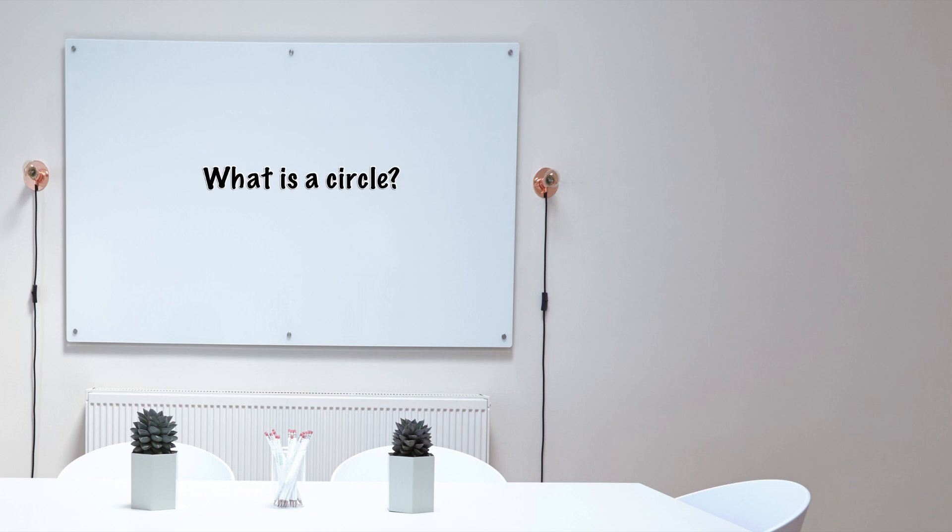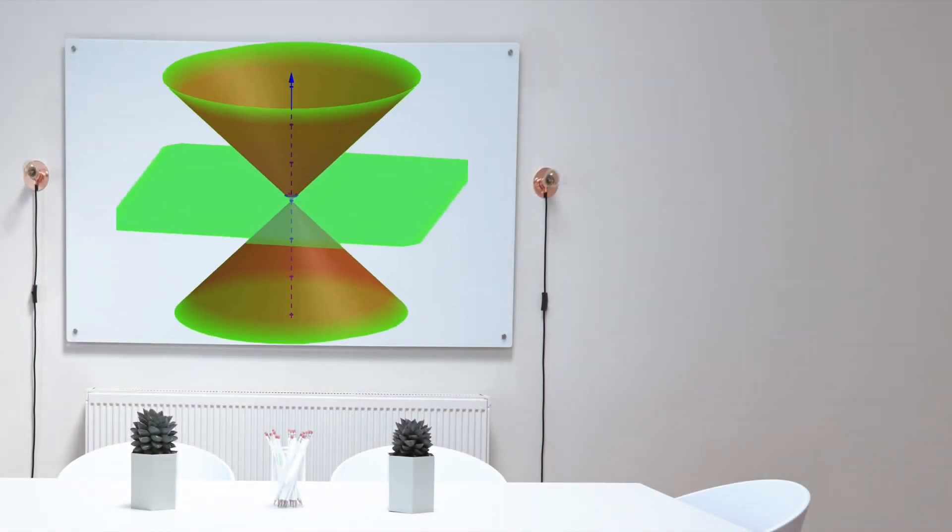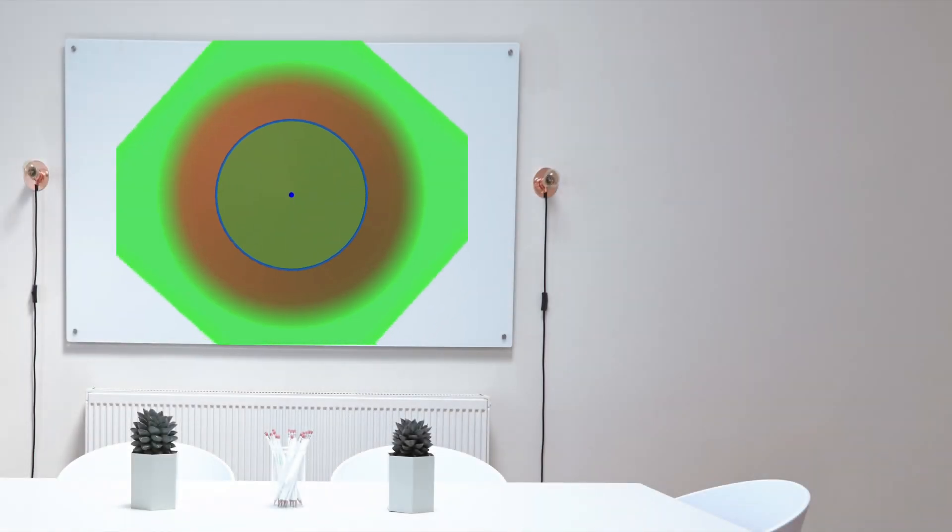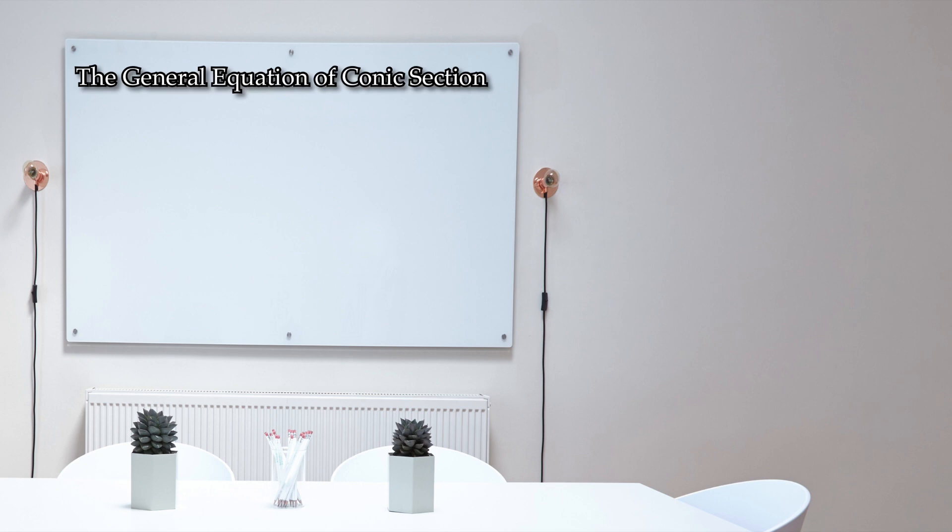What is a circle? In conic section, a circle is formed when the plane intersects the double right circular cone horizontally perpendicular to the axis.